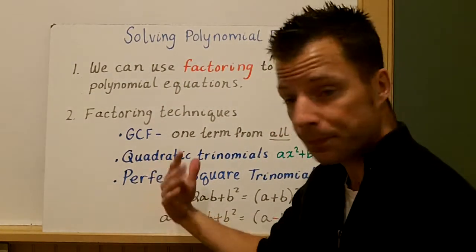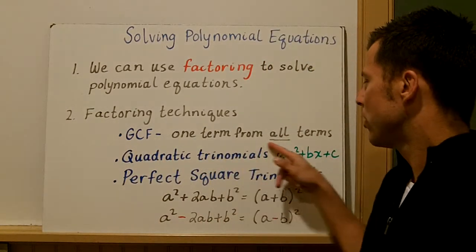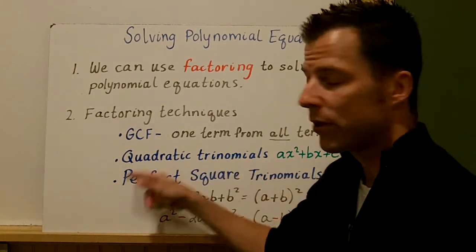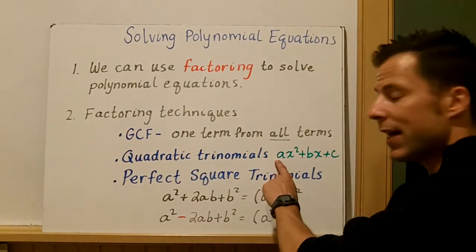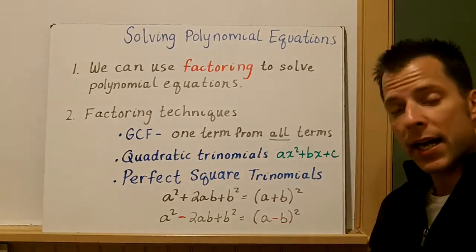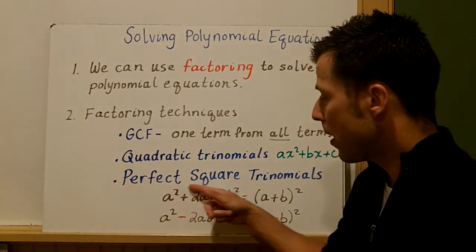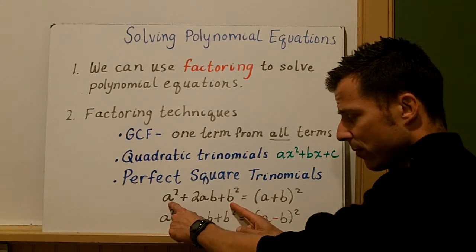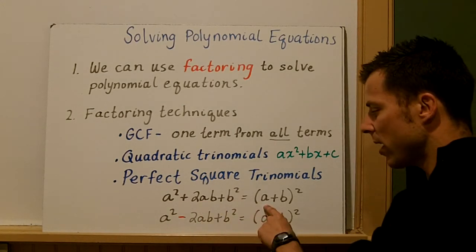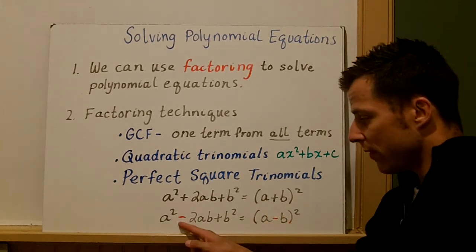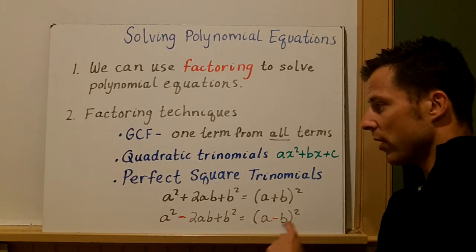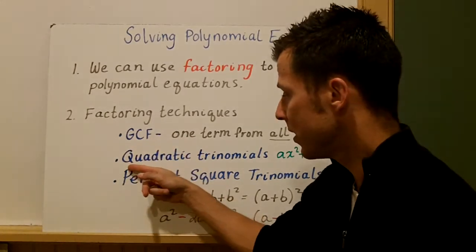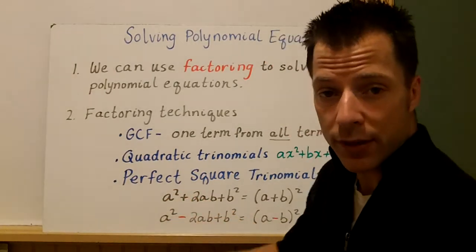Some of the factoring techniques include the greatest common factor, meaning you can factor out one term from all of the terms. We also have our normal quadratic trinomials — in the last unit we talked about when the a value is one, when the a value is other than one, and how to factor those. We also learned how to factor perfect square trinomials. The first and last terms are perfect squares and they add to be two times ab, then you write it as the quantity a plus b squared, or a minus b squared if you have a minus.